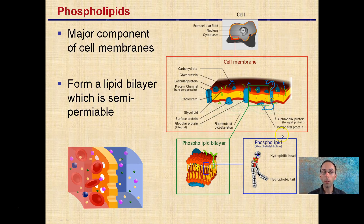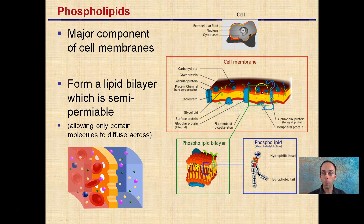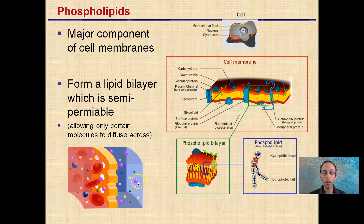Continuing on with phospholipids — they are a major component in cell membranes. They form a lipid bilayer which is semipermeable. What it means to be semipermeable: as we zoom in on this green area and look at one phospholipid here, only certain molecules are able to diffuse across it. We see some holes here allowing small molecules to go through, but not the larger ones.